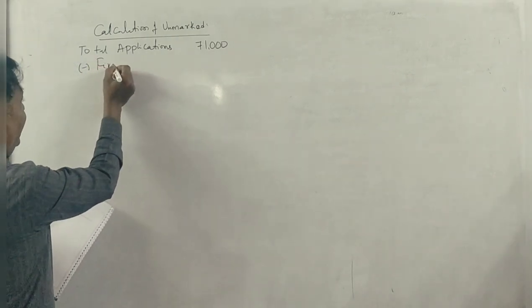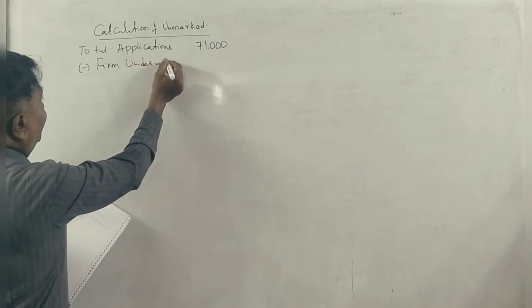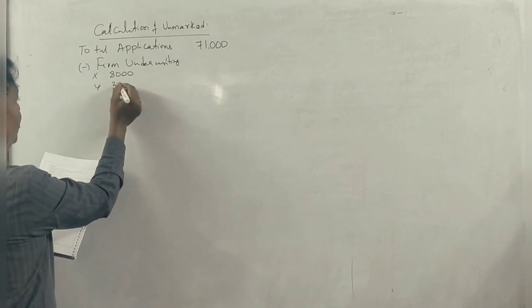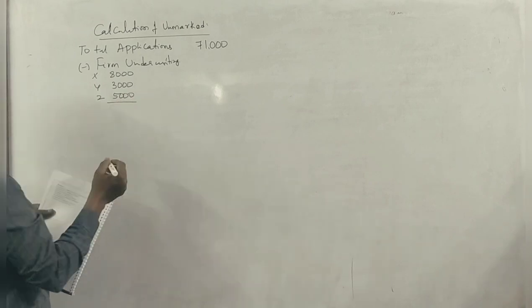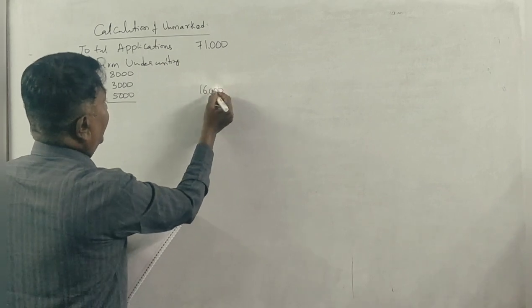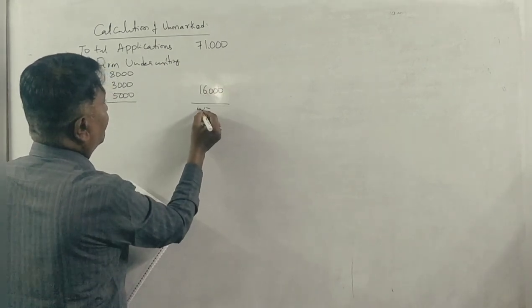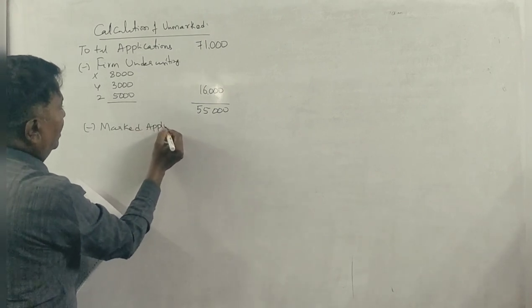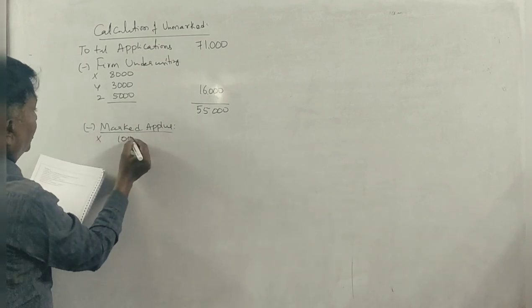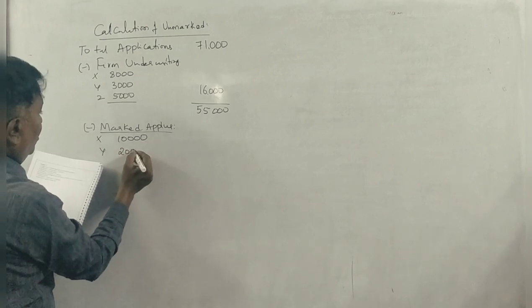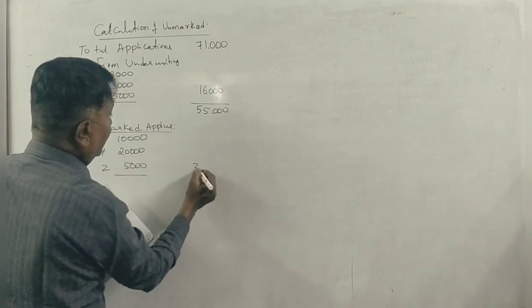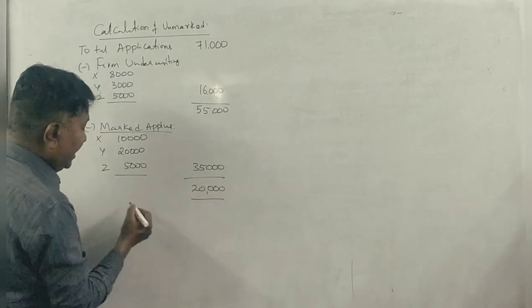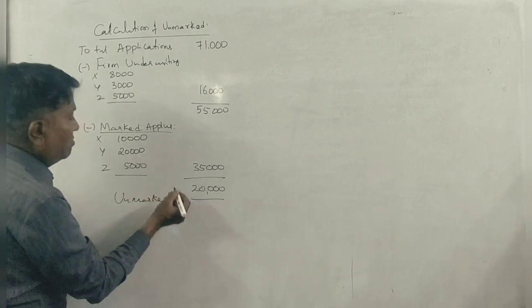The total amounts to firm underwriting 16,000. 71,000 minus 16,000 is 55,000. What is marked? Marked application. X is 10,000, Y is 20,000, Z is 5,000. Total is 35,000. It's unmarked. Unmarked applications 20,000.